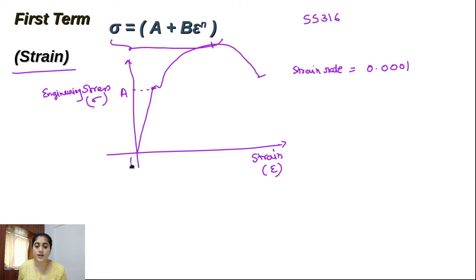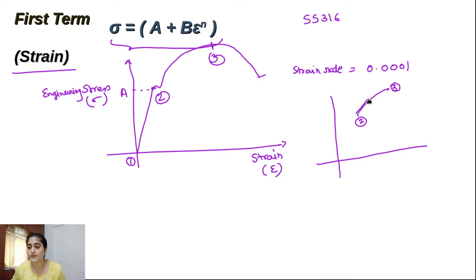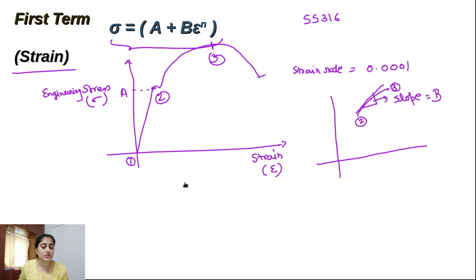For example, between strain values of 0.2 and 0.3, the graph has a certain slope, and that slope is denoted as B, which is called the strain hardening constant.